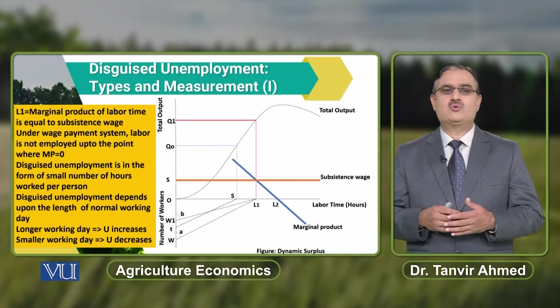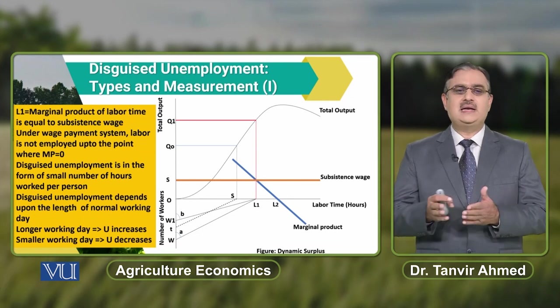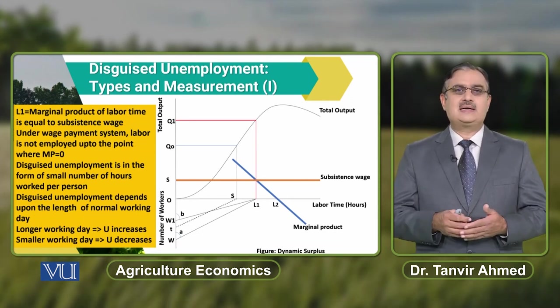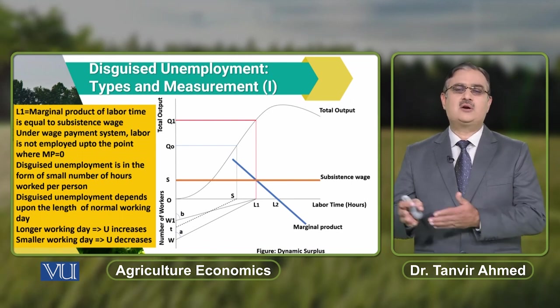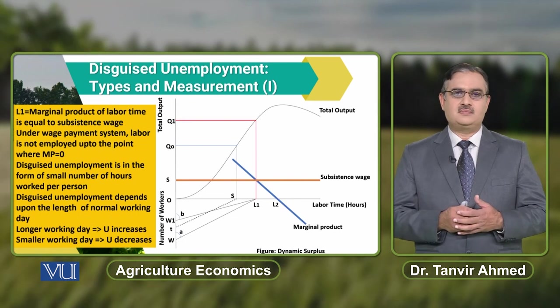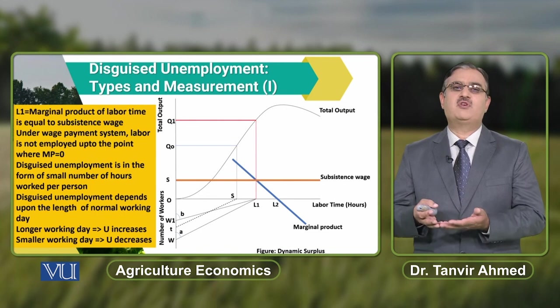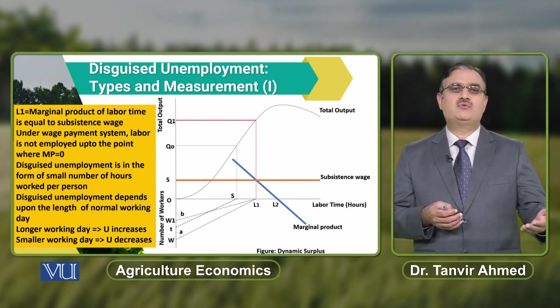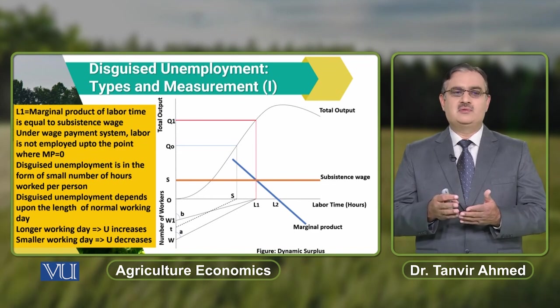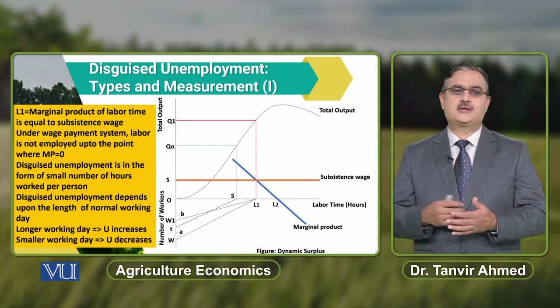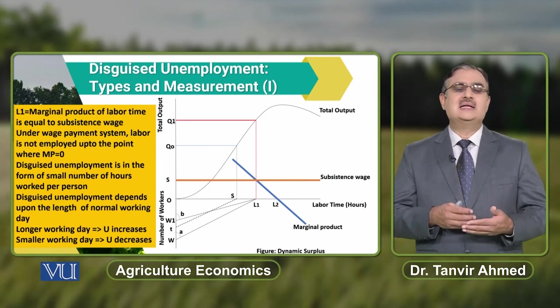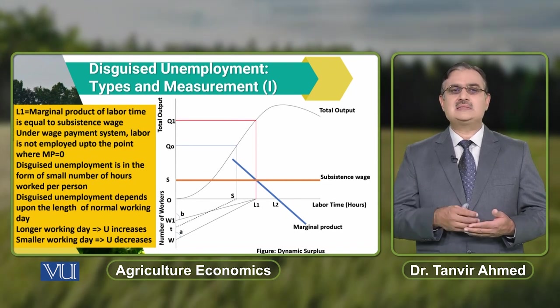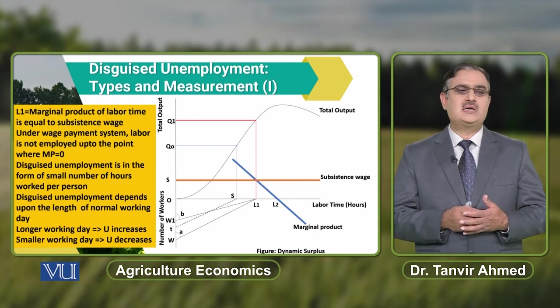Now, against L1 labour time in hours, if the firm carries out production using W number of workers, the output produced is equal to Q1 level of output. By dividing labour time in hours by workers, we can get the working day time — how much time is spent per day by a worker. But in reality, it might be possible that the same level of production can be carried out by using W1 number of workers. The difference in the number of workers from W to W1 basically depicts the surplus that exists in the production process.